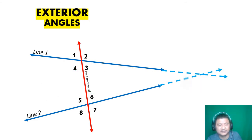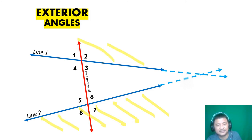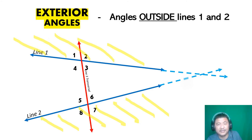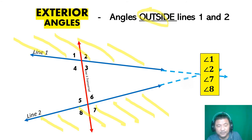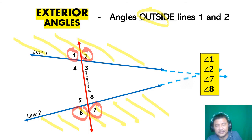Exterior angles — our focus now are not the interior but the exterior. That space outside the blue lines is exterior. There are only four exterior angles: angle one is outside, angle two is outside, angle seven is outside, and angle eight is outside.